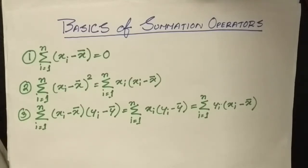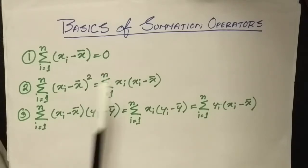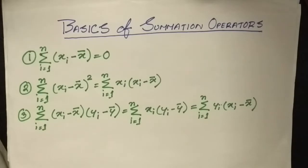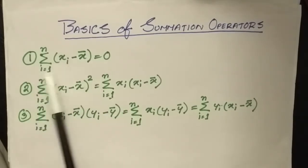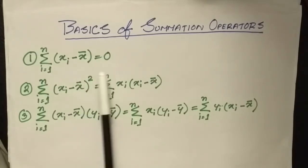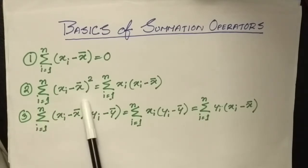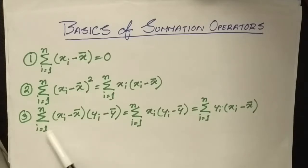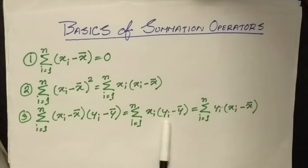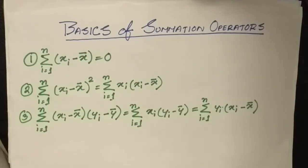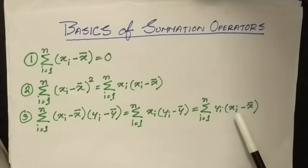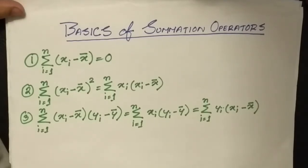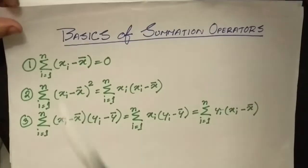Before we derive the OLS estimators, we need to know some basics about the summation operators. I've got three equations here — all basic equations of summation operators that we need to derive the least squares estimators. The first equation is Σ(xᵢ - x̄) = 0; the second is Σ(xᵢ - x̄)² = Σxᵢ(xᵢ - x̄); and the third is Σ(xᵢ - x̄)(yᵢ - ȳ) = Σxᵢ(yᵢ - ȳ), which can also be written as Σyᵢ(xᵢ - x̄). I'm going to show you how to derive these equations.